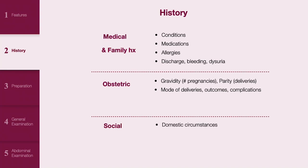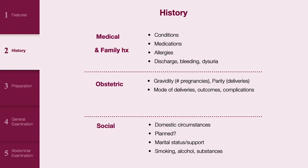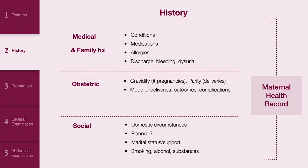When taking the social history, enquire about the patient's domestic circumstances, whether the pregnancy was planned, their marital status and any use of smoking, alcohol or substances. Ensure all of this is documented into the maternal health record and ensure to calculate the BMI.